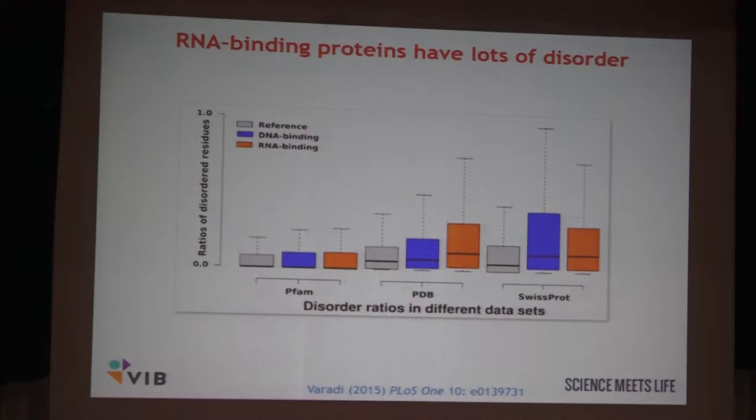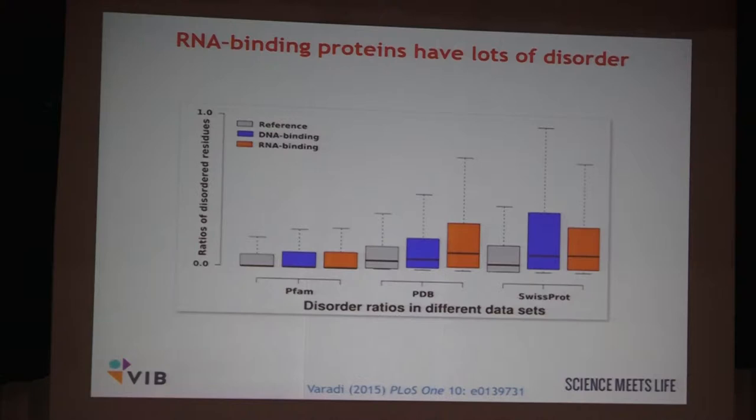More recently we were thinking about RNA binding proteins because we noticed that RNA binding proteins have a lot of disorder. We did a bioinformatics study comparing non-RNA or DNA binding proteins to DNA binding proteins to RNA binding proteins, and we showed formally by bioinformatics that RNA binding proteins have a lot of disorder. That again connects protein disorder to the phase separation field.